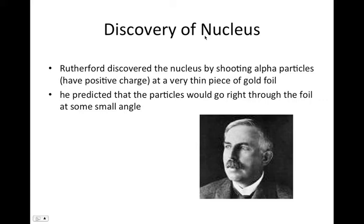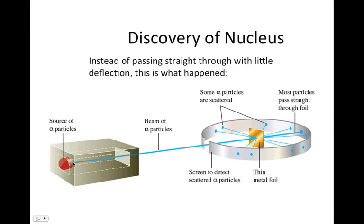What he did was he shot alpha particles. Alpha particles are just radiation, and he shot it through a piece of gold foil. And what they thought would happen is the radiation would go straight through the foil and nothing would happen, and the same amount of radiation that was shot at the foil would be detected coming through the foil.